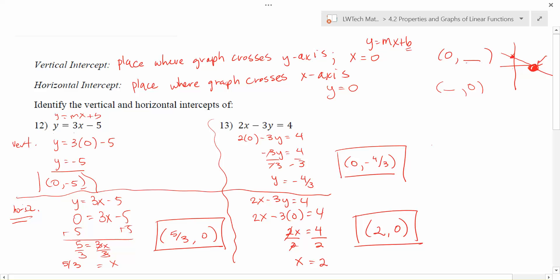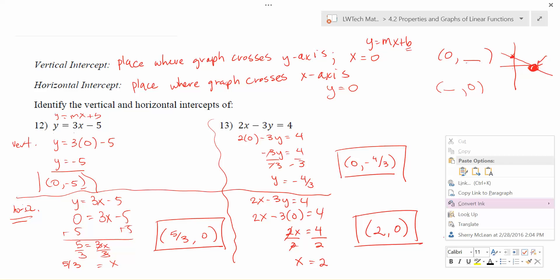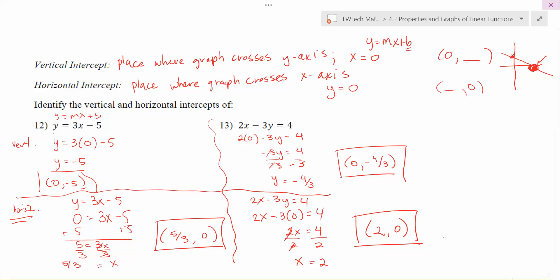So by setting x equals 0 for vertical intercept and setting y equals 0 for horizontal intercept, we're able to find those values fairly simply for any equation that you may be given, linear or otherwise.